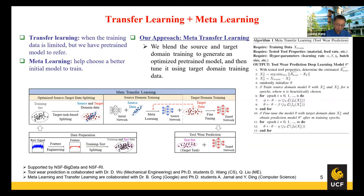In regular transfer learning, we pre-train a model on the source domain and then fine-tune it on the target domain, without the source domain training seeing any target domain data. In our proposed meta transfer learning approach, we blend the source and target domain training in the first phase to generate an optimized pre-trained model, and then fine-tune it using the target domain training data in the second phase. This approach is a combination of transfer learning and meta learning.